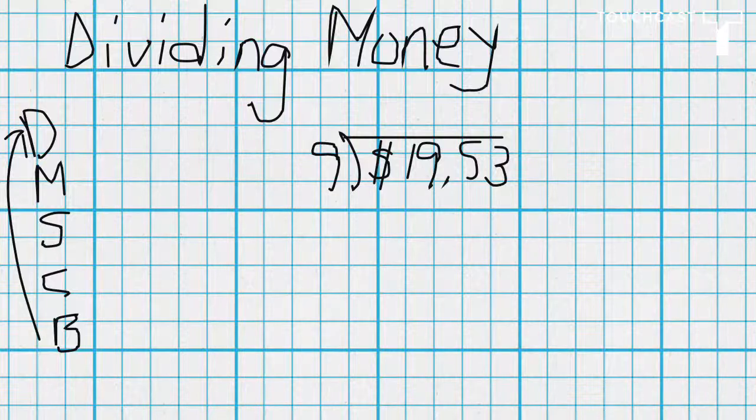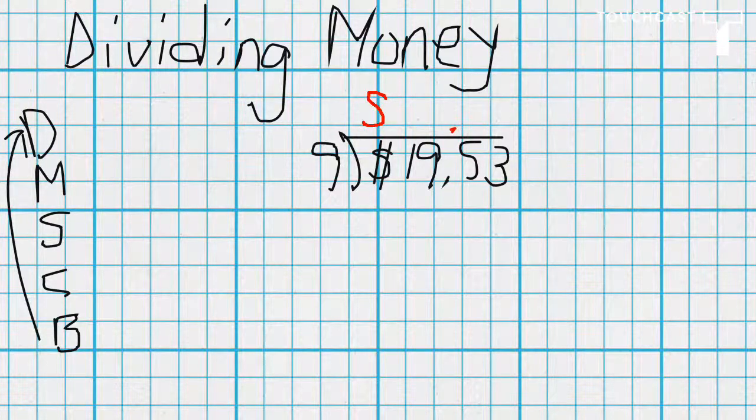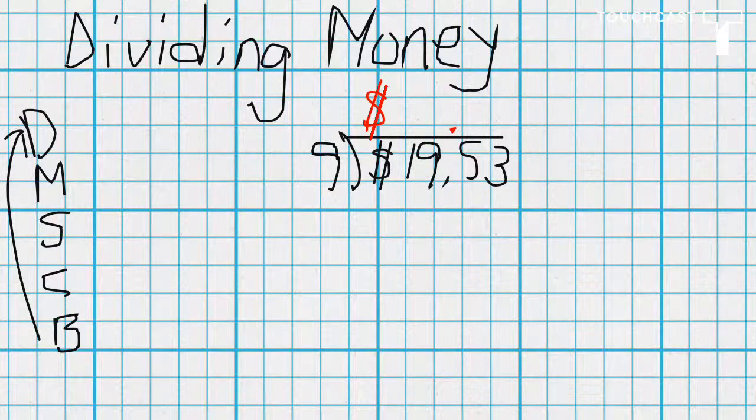So step one, first thing we want to do is put the decimal point in the quotient where it belongs and we also want to include the dollar sign. It goes right above where it is in the dividend. Next, we do exactly like we would normally do, so quick review.